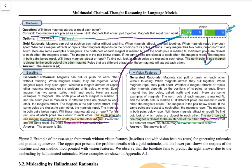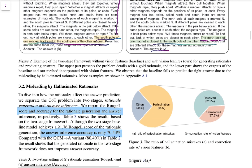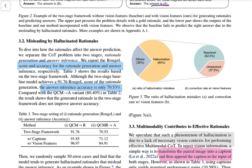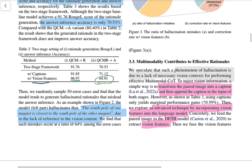Now if you use vision features as well in the model input, the rationale is also very accurate — the north pole of one magnet is closest to the south pole of the other, so there should be attraction between the two magnets. The final answer is also correct when vision features are applied. If they generate the rationale with vision features, the ROUGE value for rationale generation is much more accurate, and similarly that performance boost carries over to answer generation as well. The multi-modality input contributes a lot to overall system performance.